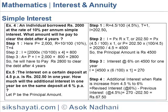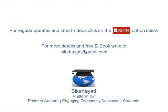Step 3: Compute interest at 6% on Rs.4500. I = 4500 × (6/100) × 1 = 270. The additional interest when the rate is increased from 4.5% to 6% is: 270 − 202.50 = Rs.67.50.